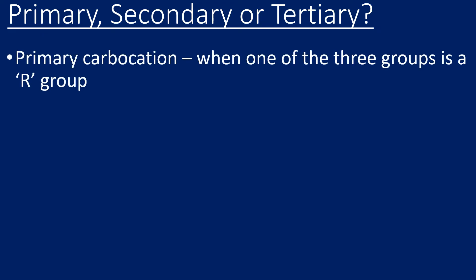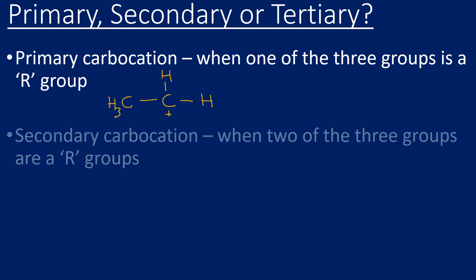Primary, secondary, or tertiary carbocation: a primary carbocation is where one of those three groups is an R group. For example, we could have two hydrogens and a methyl on our carbocation — that would be classed as a primary carbocation.